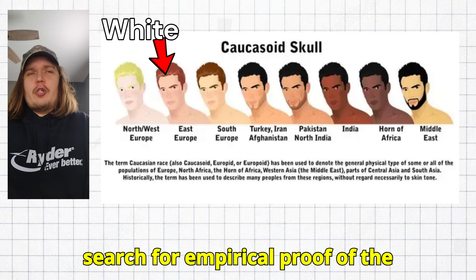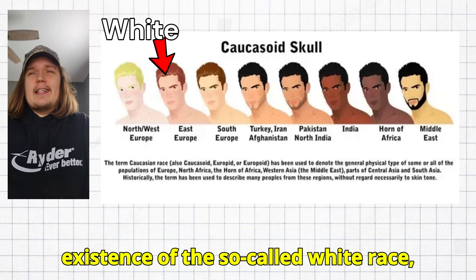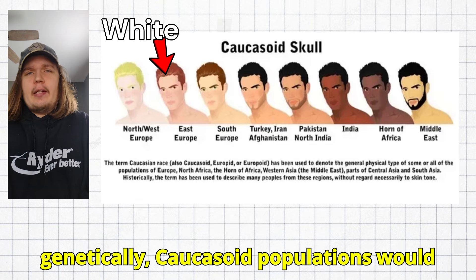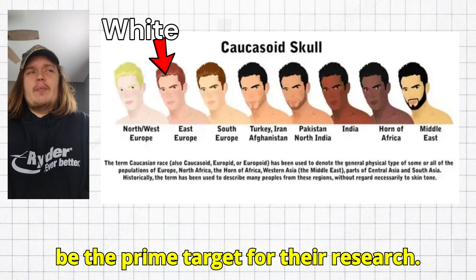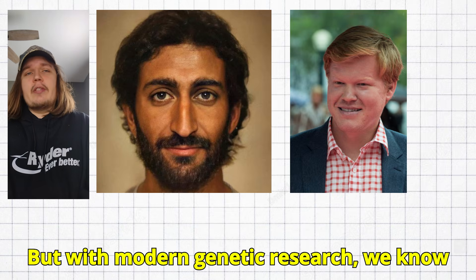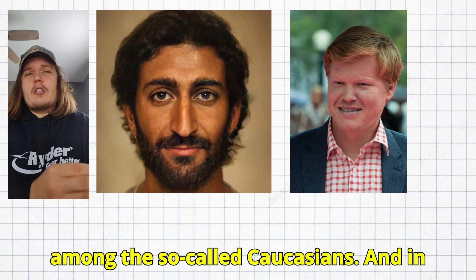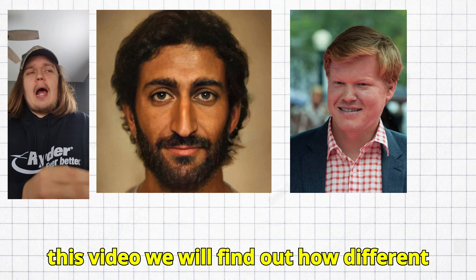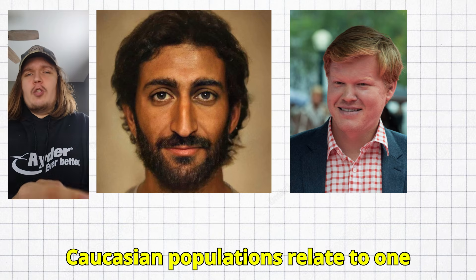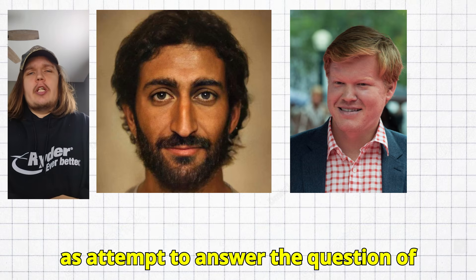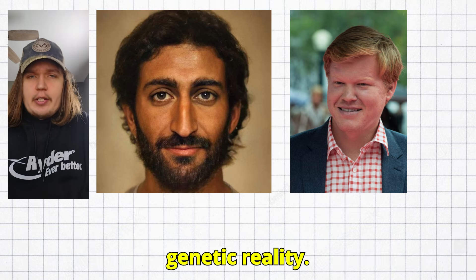If somebody was to search for empirical proof of the existence of the so-called white race, or looking for a way to define whiteness genetically, Caucasoid populations would be the prime target for their research. But with modern genetic research, we know there is quite a lot of genetic diversity among the so-called Caucasians. In this video, we will find out how different Caucasian populations relate to one another, what clusters they form, as well as attempt to answer the question of whether or not the white race is a genetic reality.